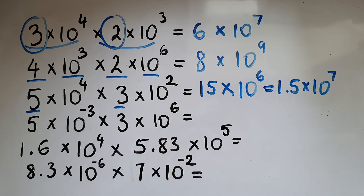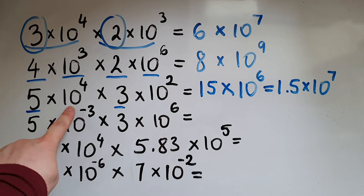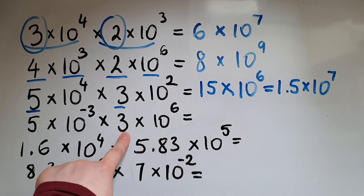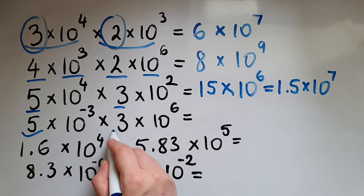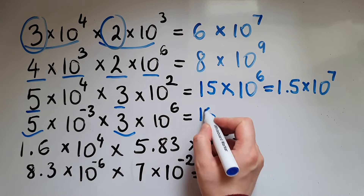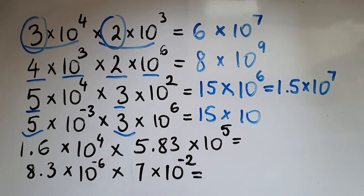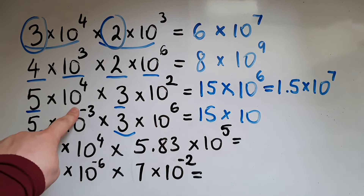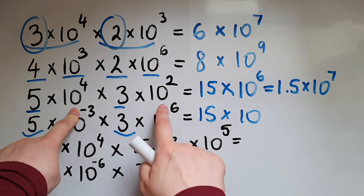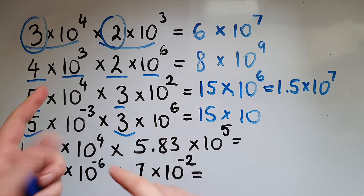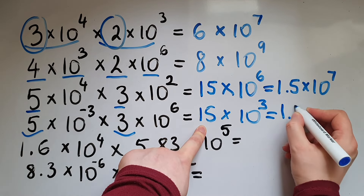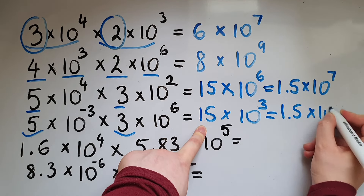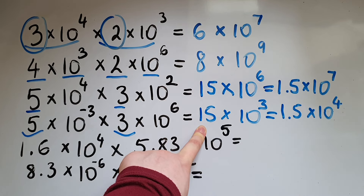Moving on to the next one, we've got 5 times 10 to the power of negative 3 times 3 times 10 to the power of 6. Multiplying these two first, we get 15 times 10 to the power of negative 3 add 6, which gives me 3. Now I'm going to need to write this as 1.5 times 10 to the power of 4.